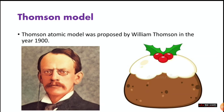J.J. Thomson was working in the lab when he discovered electrons while experimenting with a cathode ray tube. He discovered these negatively charged electronic particles and then realized that the electrons are not alone — there must be something else present to balance them.